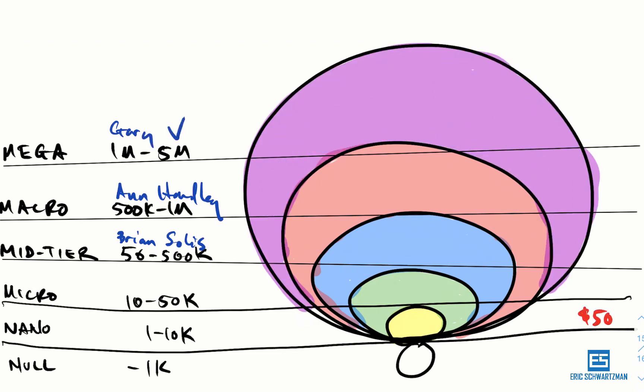If you're a nano doing $500,000 a year, how much more could you earn if you rose to micro? Could you double it? And if you're a micro and you level up to mid-tier, how much more could that earn you?